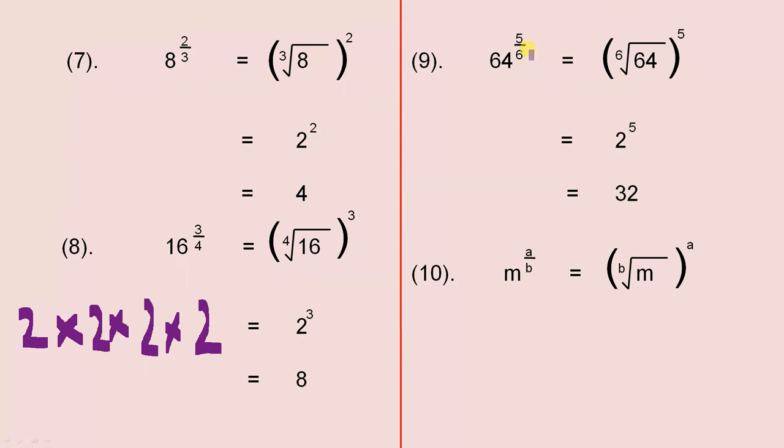64 to the 5 over 6. The sixth root of 64, whatever we find that answer, we raise it to the power of 5, because 5 is the numerator. So what are 6 numbers multiplied together to give you 64, and it's the same number? Well, the answer is 2.